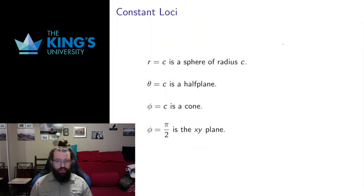As I did with cylindrical coordinates, I'd like to know what happens for constant loci. So when r is equal to a constant, that fixes a sphere, and that's where the name of the coordinate system comes from. That's what it's all based on. So r equals c is going to be all points that are a fixed distance from the origin. That's going to be exactly a sphere of radius c.